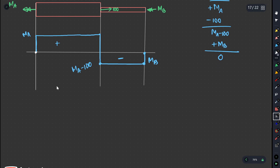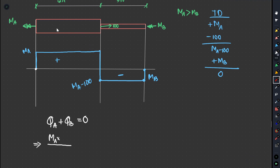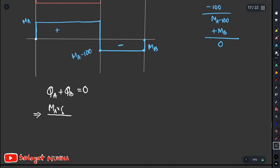The angle of twist compatibility equation is: phi_A plus phi_B equals zero. The torque T for each segment is MA for the aluminum side with length and IP, and MB for the steel side with length and IP. The sign convention must be followed — positive for MA, negative for MB. The equation uses length, IP (polar moment of inertia), and G for each material.